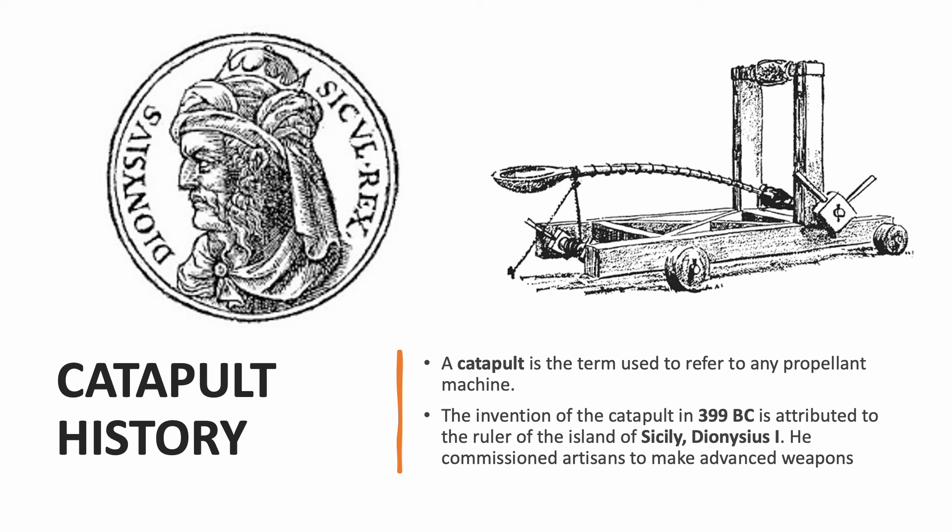A catapult is a type of machine used as a weapon to throw rocks or other things, such as hot tar, that would cause damage to something else. Often, catapults were set on higher ground or on castle towers to let them shoot farther. They shot rocks to break castle walls, or pitch or hot tar to set the target on fire.